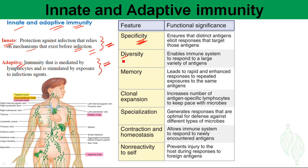The innate immune system has less diversity, while the adaptive immune system has higher diversity because B cells and T cells can produce a large variety of BCRs and TCRs specific to different pathogens. The innate immune system does not have memory, whereas only the adaptive immune system has memory. Innate immune cells cannot undergo clonal selection, but adaptive immune cells — B cells and T cells — can clonally select after encountering a specific bacterium or virus.